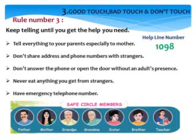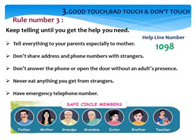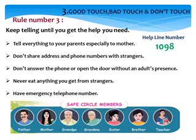To recap: Rule number 1 — you should not allow anyone to touch your private parts: your lips, chest, between your legs, and your buttocks. You should not talk about others' private parts. Rule number 2 — you should shout immediately if you are in a problem and quickly run away from the place. Rule number 3 — you should inform what happened to your parents and safe circle members: father, mother, grandpa, grandma, sister, brother, and teacher for help.